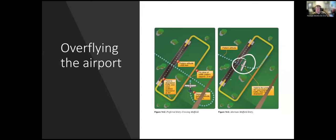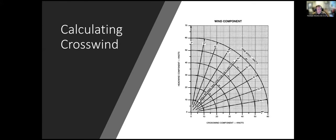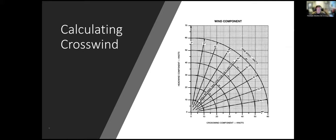The safest approach for the non-towered airport entry isn't flying directly into the pattern from above — extend out, execute a teardrop, and enter on the 45 to the downwind leg.